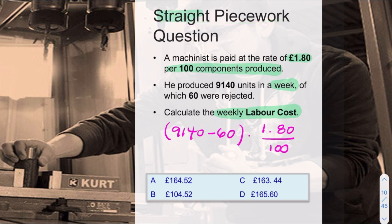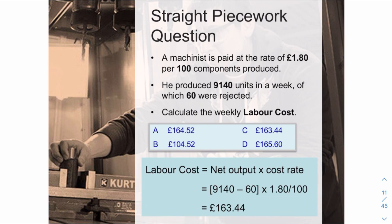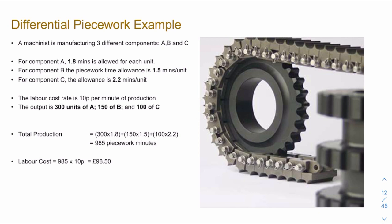What we mean by 'straight' piecework is that all the items this person produces are the same — these 100 components are all identical. That calculation gives you the weekly labour cost of £163.44.